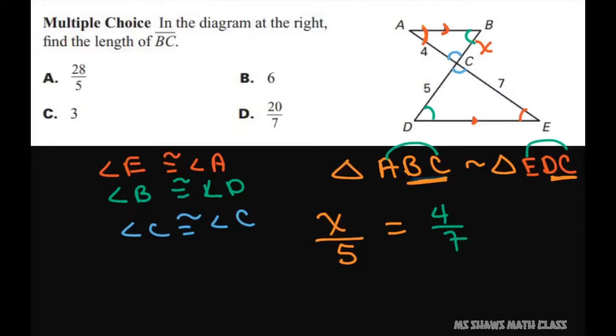So to solve for X we're just going to cross multiply and you're going to cross this up here and you get X equals 20 divided by 7. So your answer is going to be D. Just make sure you match everything up based off your similarity statement here.